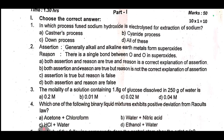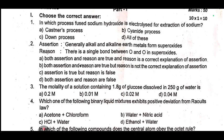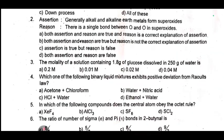Second one, reason assertion: Generally, alkali and alkaline earth metals form superoxides. Reason: there is a single bond between O and O in superoxides. Third one, the molality of a solution containing 1.8 gram of glucose dissolved in 250 gram of water is dash.